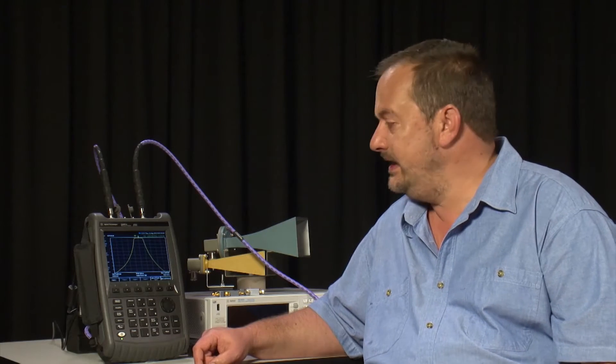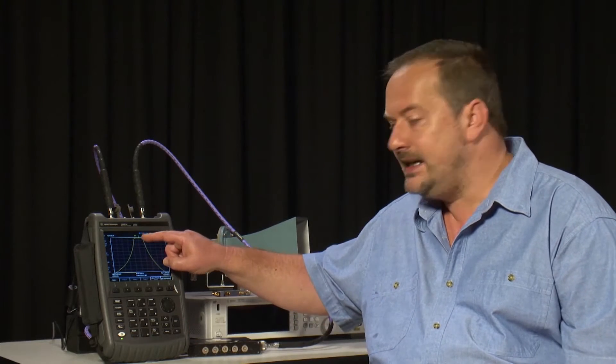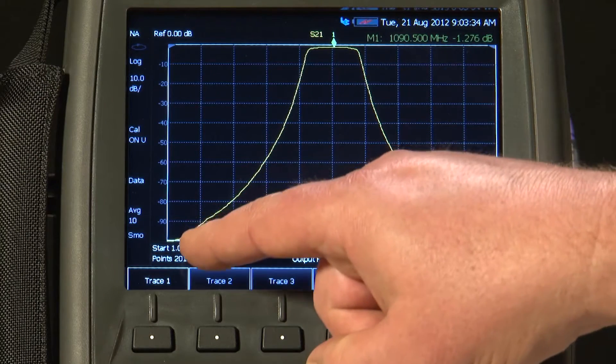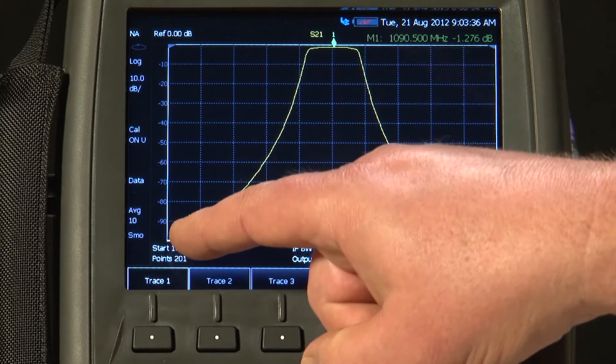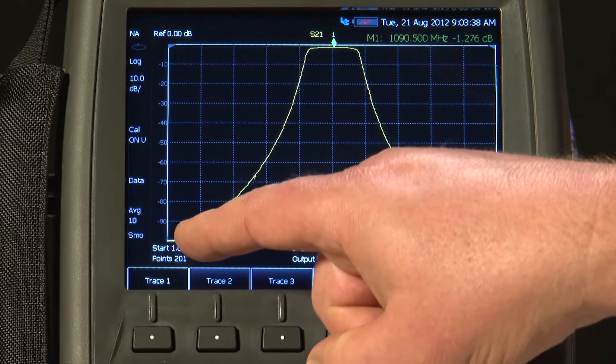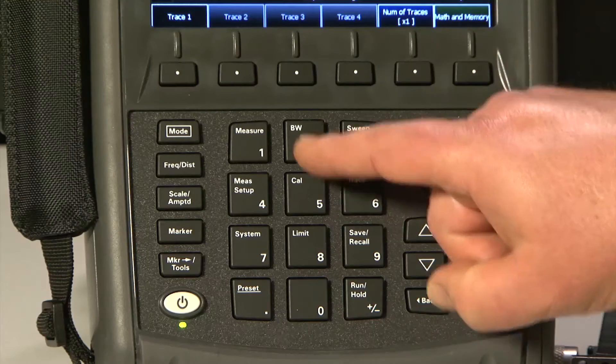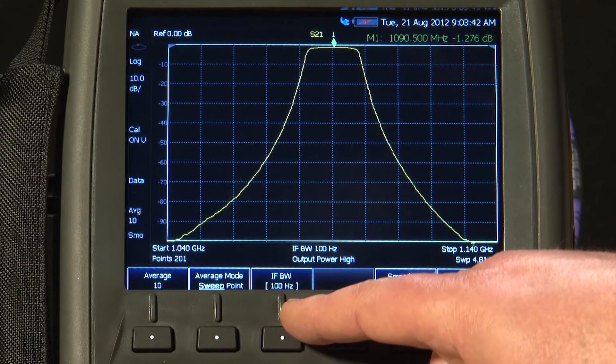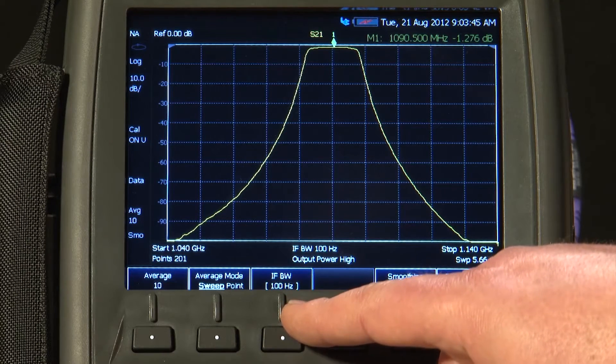Another thing you will immediately see on the FieldFox is the excellent dynamic range. Here, without any effort at all, we are easily measuring more than 100 dB down the skirts of this filter. And if I press the Bandwidth button, you will see I have only had to set a 100 Hz IF bandwidth in order to do that.